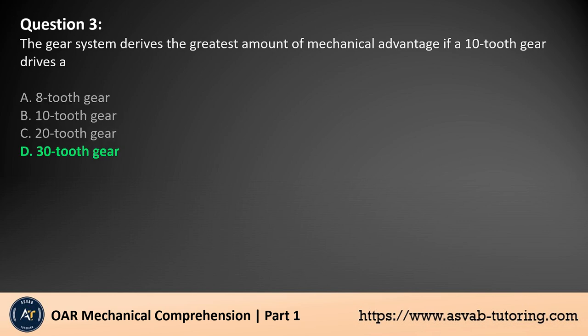The answer is D. The greater the difference between the number of teeth of the two meshed gears, the greater the torque or mechanical advantage. So, a gear system derives the greatest amount of mechanical advantage if a 10-tooth gear drives a 30-tooth gear.